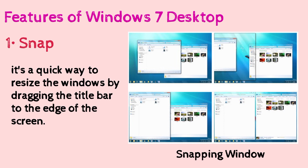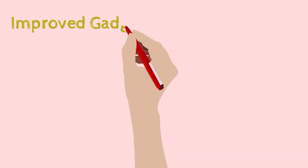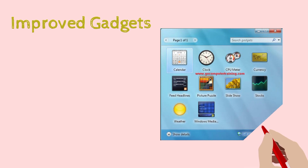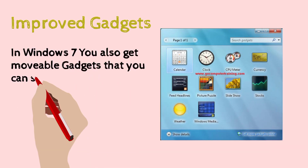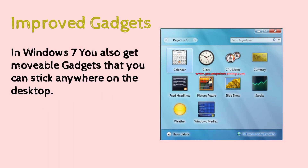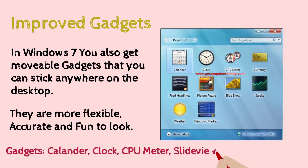Next is improved gadgets. In Windows 7 we get movable gadgets that you can place anywhere on the desktop. They are more flexible, accurate, and fun tools. Some gadget names are calendar, clock, CPU meter, slide show, and more.